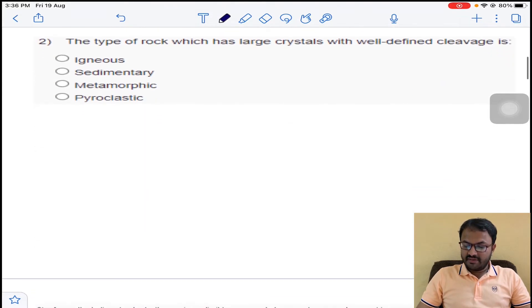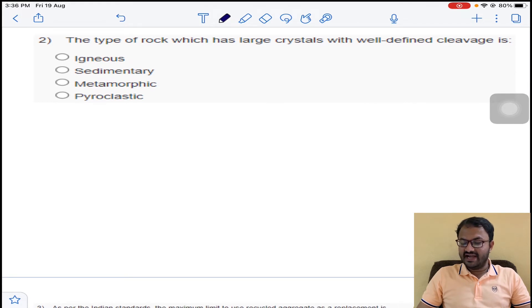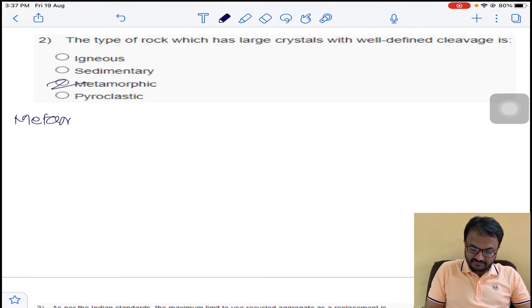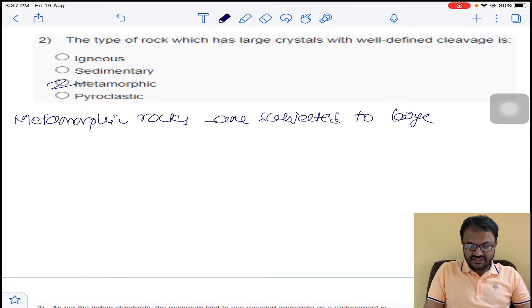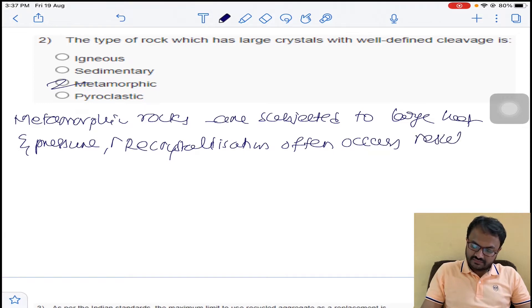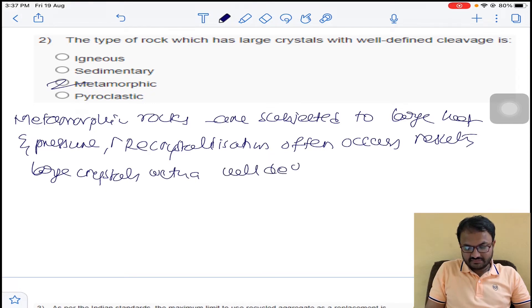Next, the type of rock which has large crystals with well-defined cleavage is obviously metamorphic rocks. Metamorphic rocks are subjected to large heat and pressure, then recrystallization often occurs. By this recrystallization, it will result in large crystals with a well-defined cleavage.